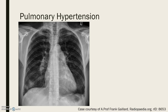90% of patients with pulmonary hypertension will have an abnormal chest x-ray. Plain imaging features an elevated cardiac apex due to right ventricular hypertrophy, enlarged right atrium, a prominent pulmonary outflow tract, enlarged pulmonary arteries, and pruning of the peripheral pulmonary vessels.